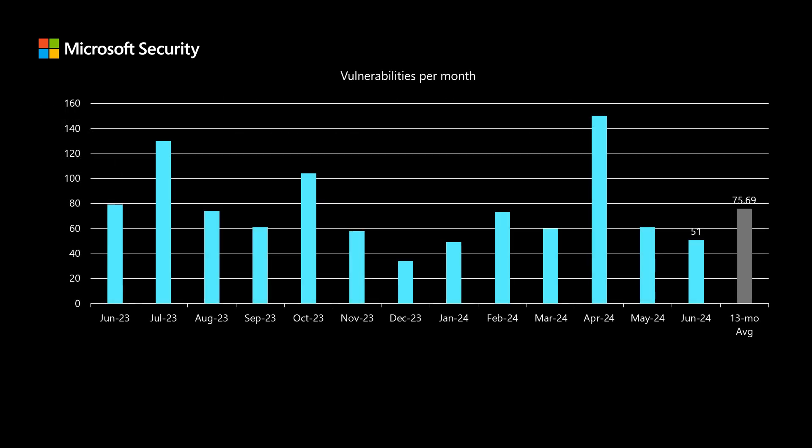Before I dig into today's release, I like to compare it to the previous 12 months to see how it stacks up. This month we have 51 total vulnerabilities that are newly disclosed in today's release, and that's a little bit lower than our average of just over 75 and a half over the past 13 months.